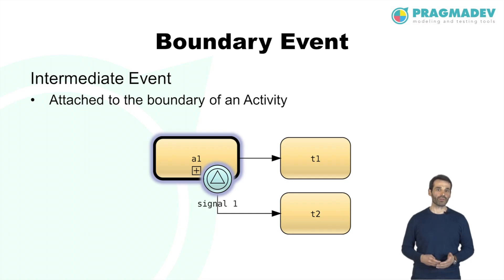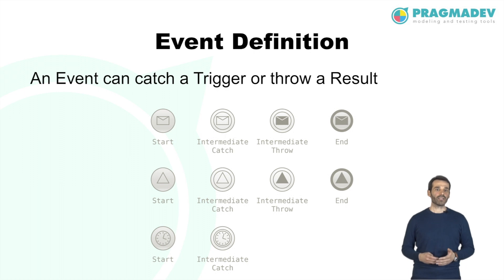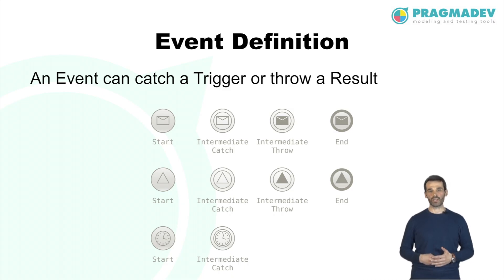In this example, the triggering of Signal 1 while A1 is being executed will result in the interruption of the call activity, and the flow to T2 will be taken. An event can catch a trigger or throw a result. Start and intermediate catch events can catch triggers, while end and intermediate throw events can throw results. Both triggers and results are represented by event definitions.